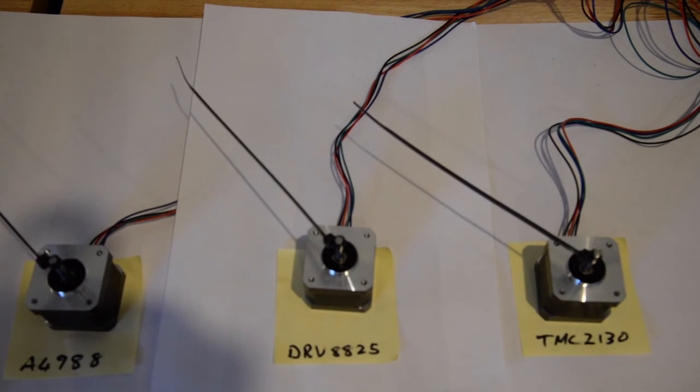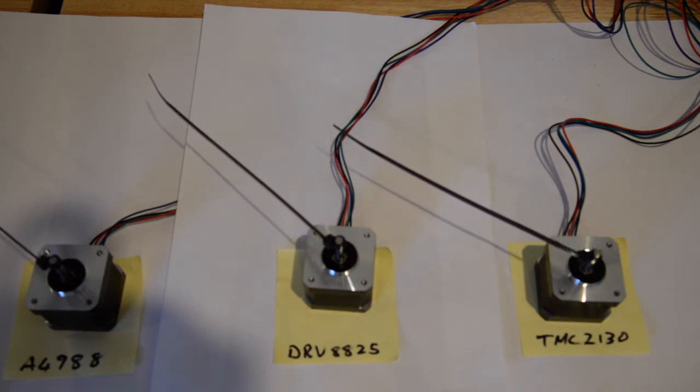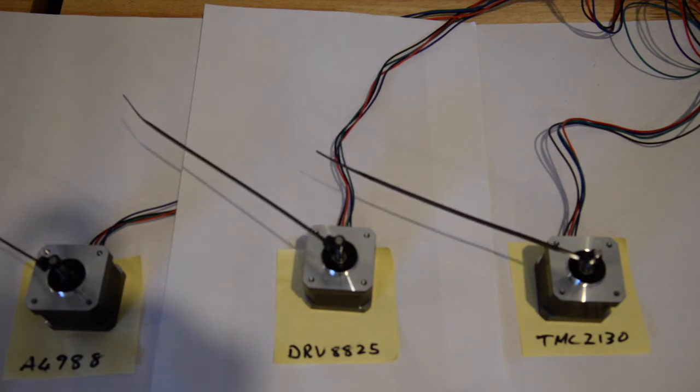So I guess that is why people use tail smoothers on the DRV8825s. But you'll see the TMC2130 is super smooth; it doesn't need any smoothing at all.